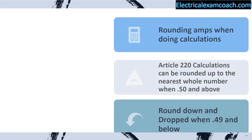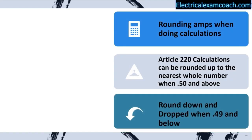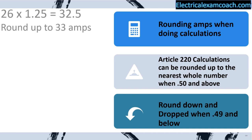In Article 220 calculations, we're going to be able to round up or down. We're going to round up to the nearest whole number when it's 0.50 and above, and round down when it's 0.49 or below. We're only going to do it one time at the end of the calculation — you're not going to be rounding in between each piece, or you'll end up with the wrong answer.